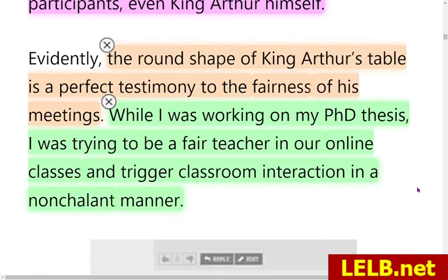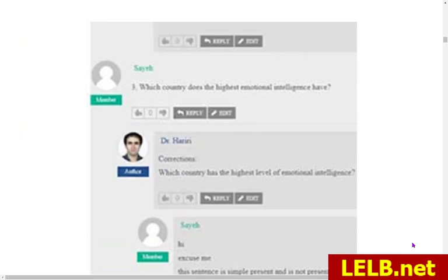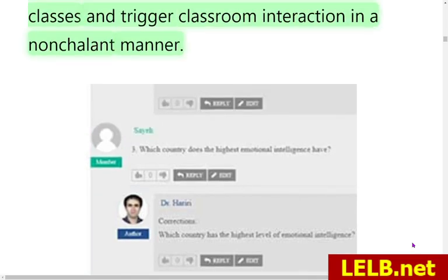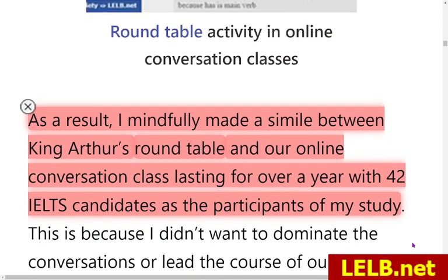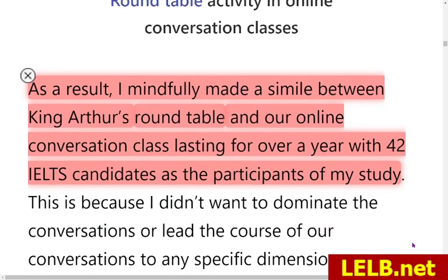King Arthur's roundtable didn't have any special angle to indicate the superiority of any of the participants, even King Arthur himself. The round shape of King Arthur's table is a perfect testimony to the fairness of their meetings. While working on my PhD thesis, I was trying to be a fair teacher in our online classes, running some conversation classes to trigger classroom interaction in a fair way. This is a screenshot I took from one of those online classes for IELTS preparation.